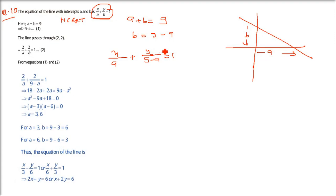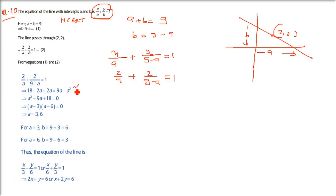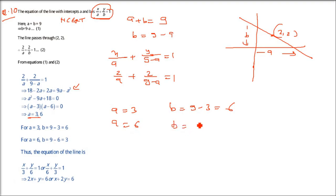The line is passing through (2, 2), so substituting x = 2, y = 2: 2/a + 2/(9 - a) = 1. This forms a quadratic equation. Solving it, a comes as 3 and 6 — two roots. When a = 3, b = 9 - 3 = 6; when a = 6, b = 9 - 6 = 3.